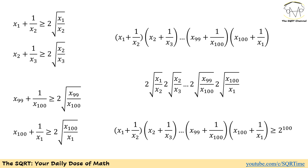Now let's move on and multiply what we have on the left-hand side of all these inequalities. We are going to end up with x1 plus 1 over x2, times x2 plus 1 over x3, and so on up to x100 plus 1 over x1. We use the same approach for the right-hand side.